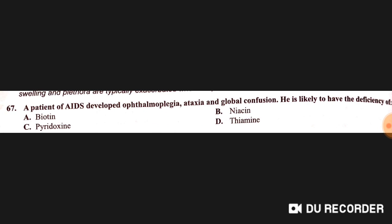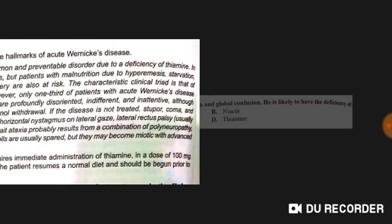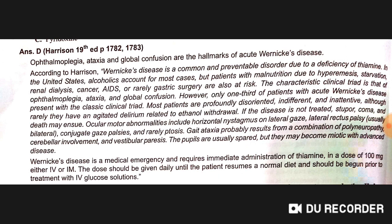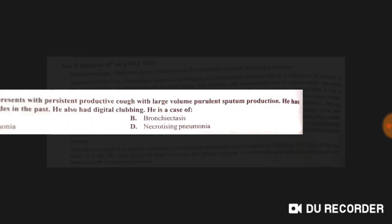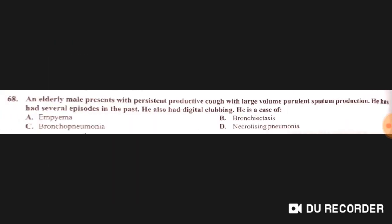A patient with AIDS developed ophthalmoplegia, ataxia, and global confusion. This patient likely has a deficiency of thiamine — these symptoms are the hallmarks of acute Wernicke's disease.